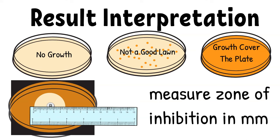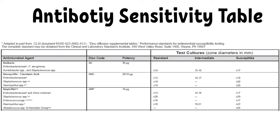Then compare to interpretive table from CLSI documents and results are interpreted as susceptible, intermediate, or resistant. Here is an example of the table from CLSI.